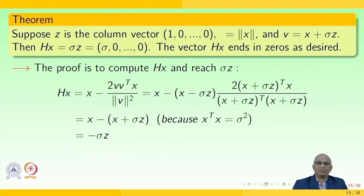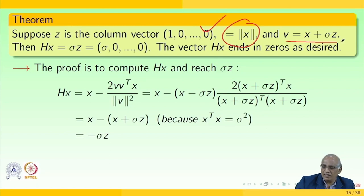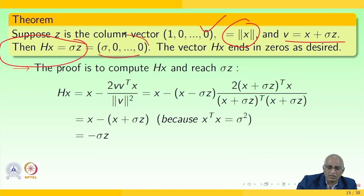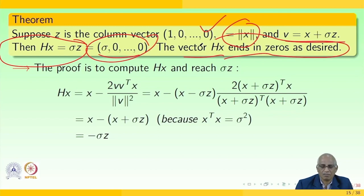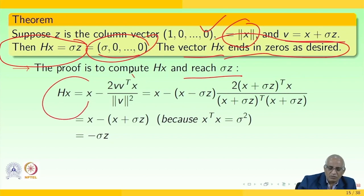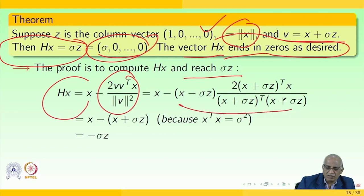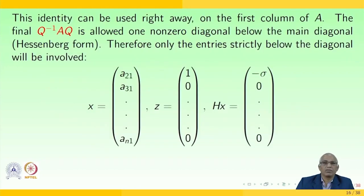The key identity is HX = σZ. Theorem: suppose Z is the column vector (1, 0, 0, ...) scaled by ‖X‖, and V = X + σZ. Then HX = σZ = (σ, 0, 0, ...). The vector HX ends in zeros as desired. The proof computes HX = X − 2V·Vᵀ/(‖V‖²)·X and simplifies to reach σZ.